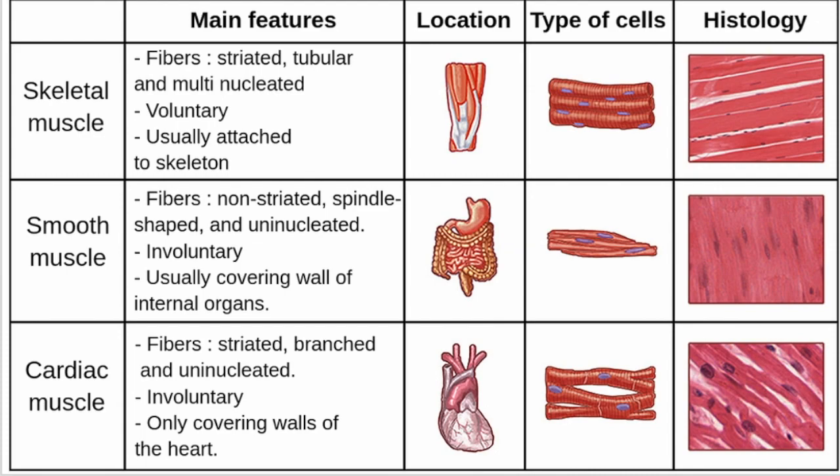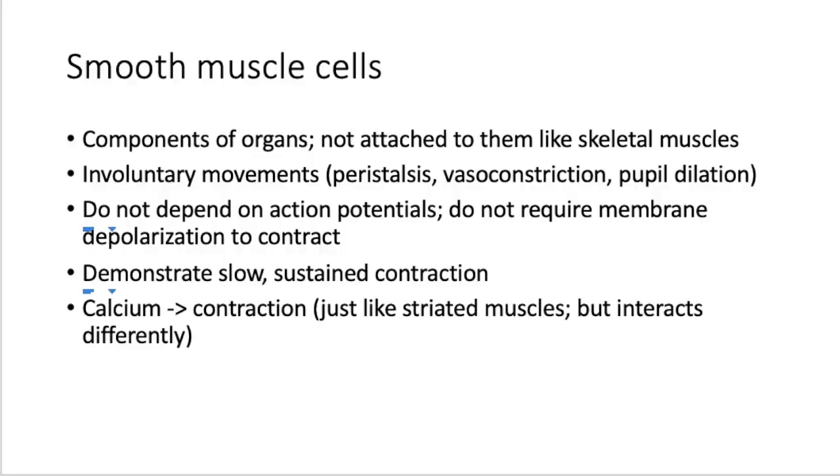Your autonomic nervous system is automatically controlling all of these different functions. And then really quickly, in comparison, cardiac muscle is found in the heart — it's responsible for the rhythmic contraction of the heart, a.k.a. your heartbeat. Cardiac muscle fibers are branching, intercalated, lightly striated, have a single nucleus per fiber, and are not the focus of today's lecture. So let's get back into smooth muscle cells.